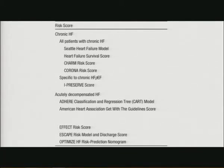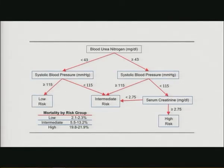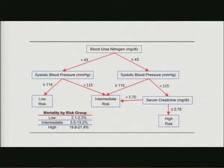To determine which patients aren't doing well, there are various risk scores - they can help but aren't golden rules. For acute decompensated heart failure, one easy scoring tool uses BUN and blood pressure: low BUN with good blood pressure means low risk. High BUN combined with low blood pressure and increased serum creatinine puts you in the high-risk group. Using just two or three factors together helps decide which patient is doing better and guides treatment decisions.